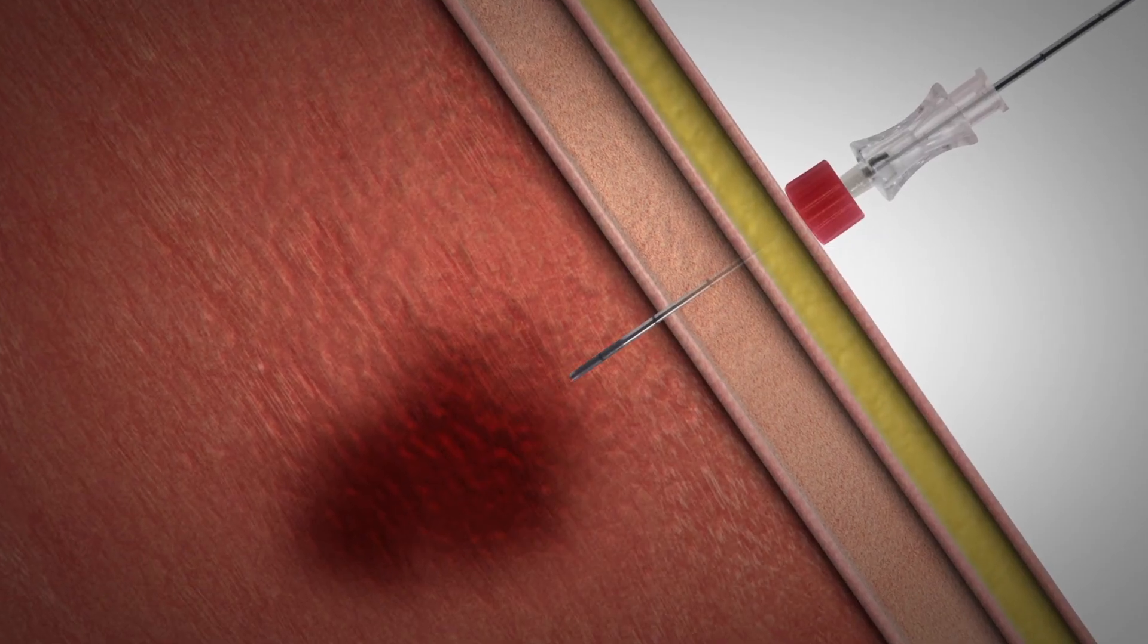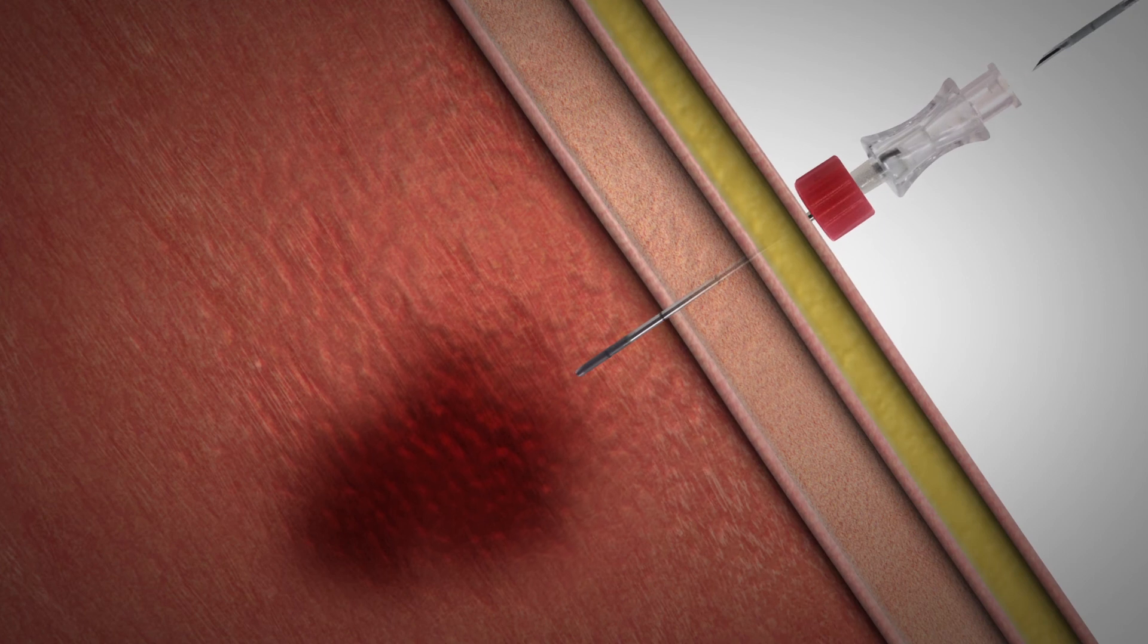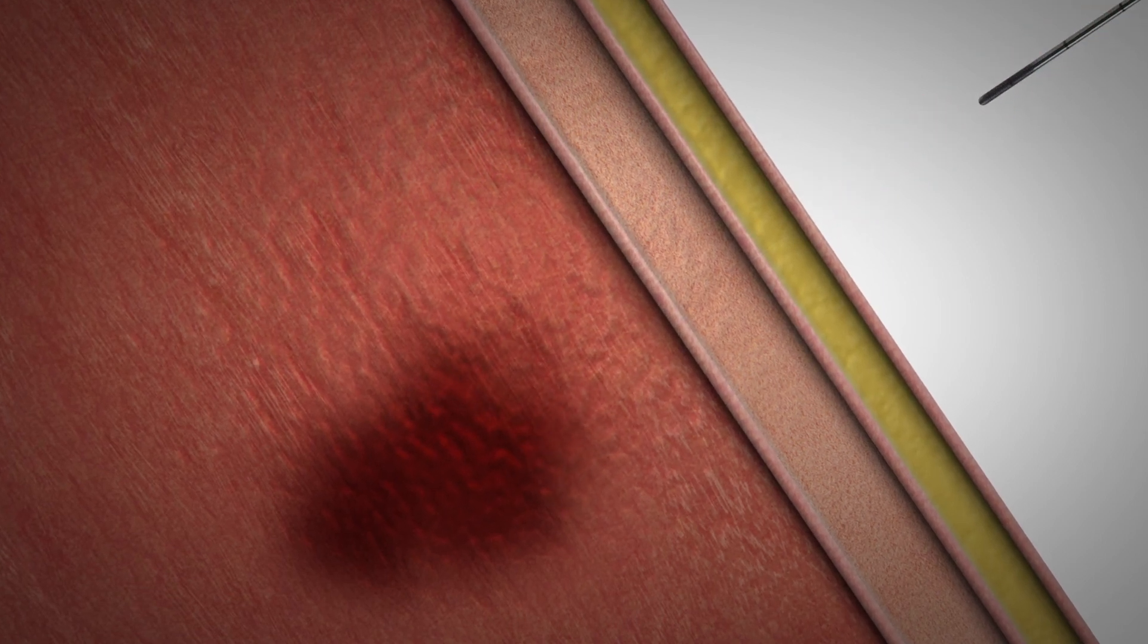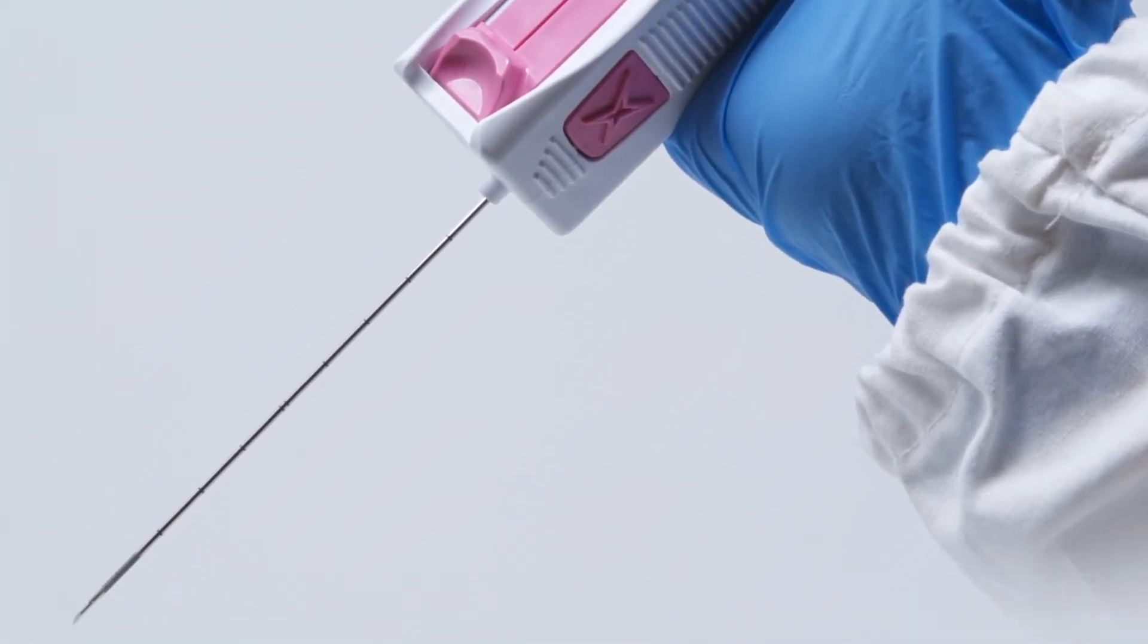Extract MedOne gently out of the coaxial needle and pull back the loading lever once to withdraw the cannula and expose the sample specimen.